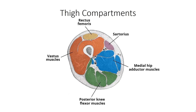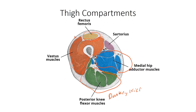As a synopsis of thigh compartments — slicing the thigh in half — sartorius starts lateral at the hip and goes medial toward the knee. The vastus muscles and rectus femoris make up the anterior compartment. The medial compartment contains the adductors. The posterior compartment muscles are flexors at the knee and extensors at the hip. The lateral compartment contains the abductors with tendons visible on the side.